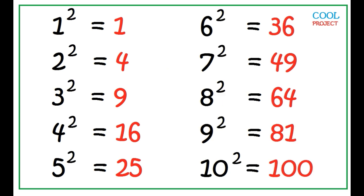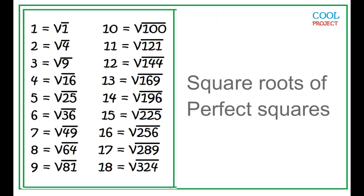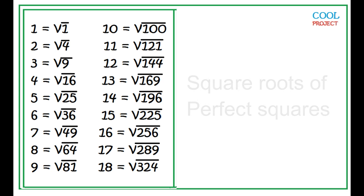It can also be written as a product of a number raised to the second power. These are also the square roots of the perfect squares. Square root of 1 is 1. Square root of 4 is 2. Square root of 9 is 3. Square root of 16 is 4. Square root of 25 is 5.